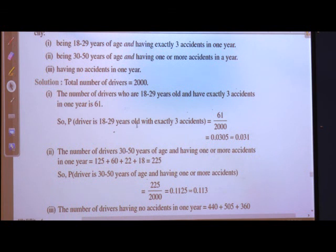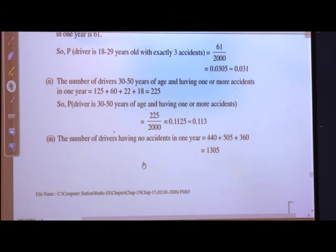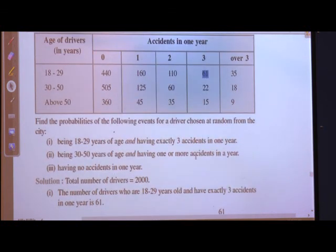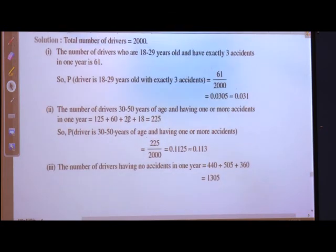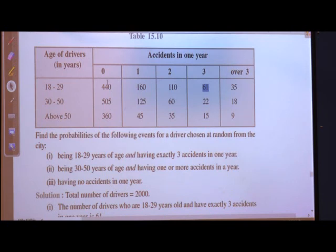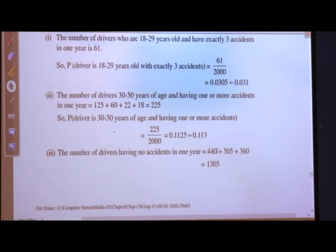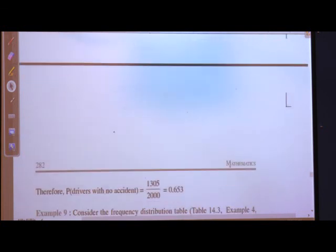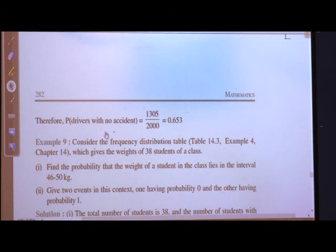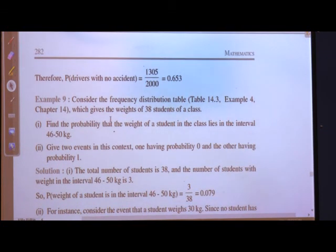Proceeding to the third sub-question: the number of drivers having no accidents in one year. There is no age restriction here. We add all values under the column for 0 accidents: 440 plus 505 plus 360 equals 1305. Therefore, the probability of drivers with no accident is 1305 upon 2000.